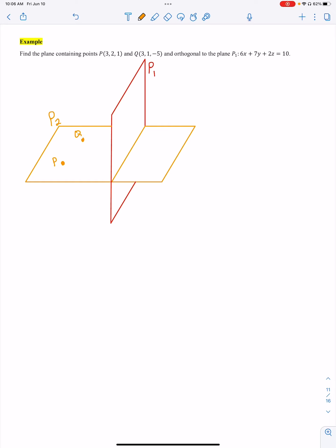In this video, we are continuing our discussion of section 11.5 with another example. This example says find the plane containing the points (3, 2, 1) and (3, 1, -5).